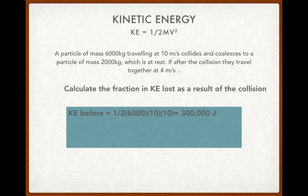Afterwards we have two particles. So we need each of their kinetic energies. We have the 6000 kgs traveling at 4 meters per second, and we have the 2000 kgs traveling at 4 meters per second. So what we do is we get the kinetic energy after by adding the individual kinetic energies together. That's 16,000 joules.